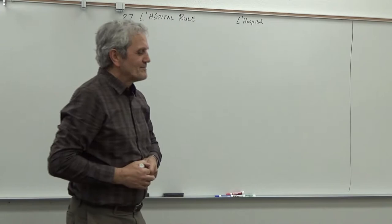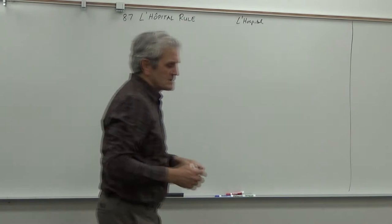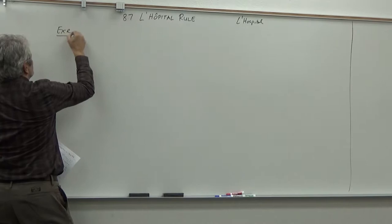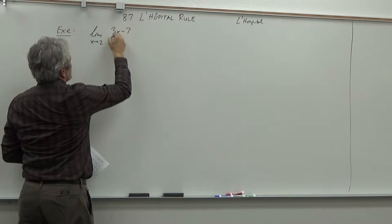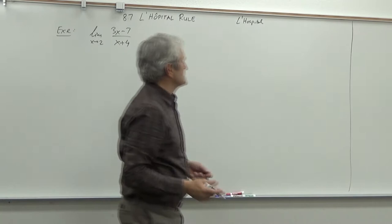That's probably the proper way to do it. Anyway, enough of history. Let's consider the following limit: the limit when x goes to 2 of (3x − 7) over (x + 4).